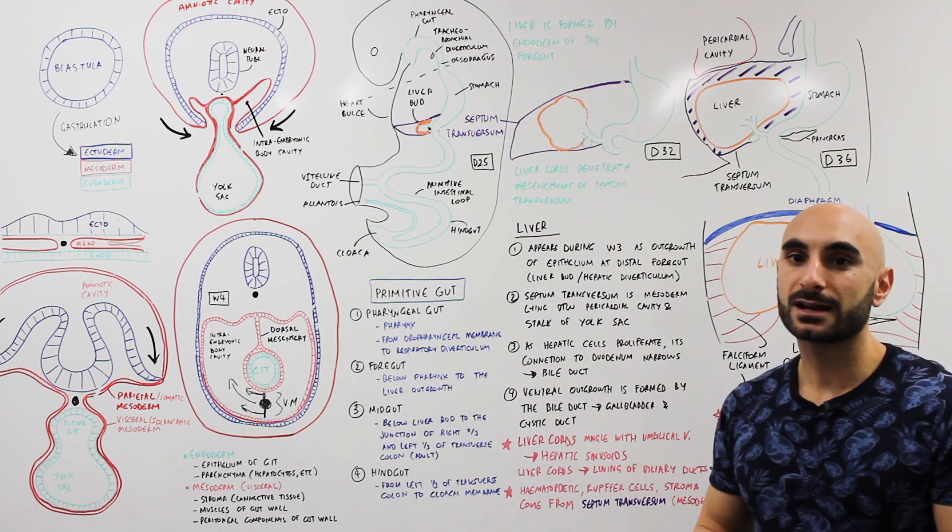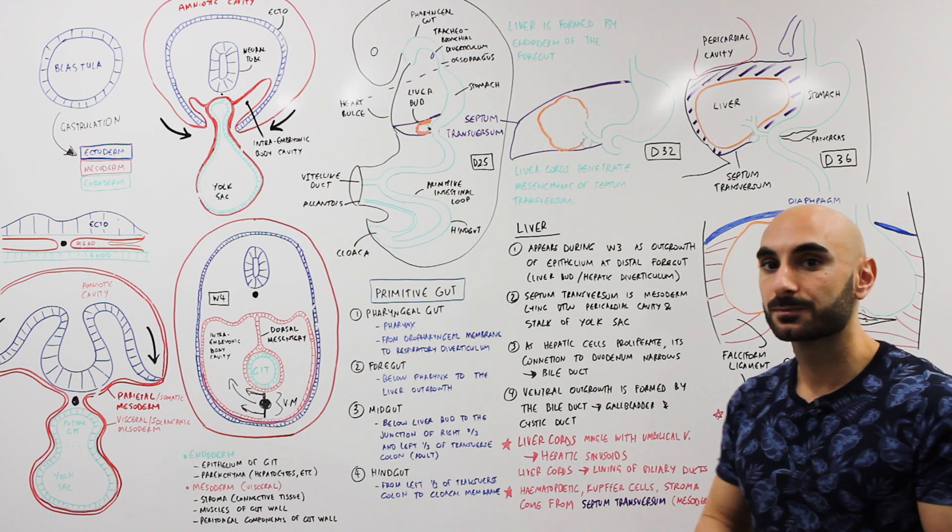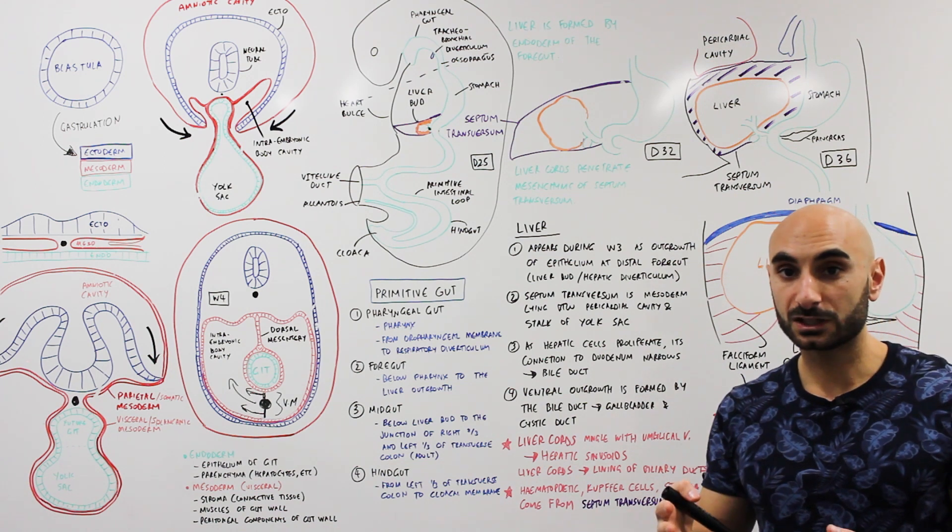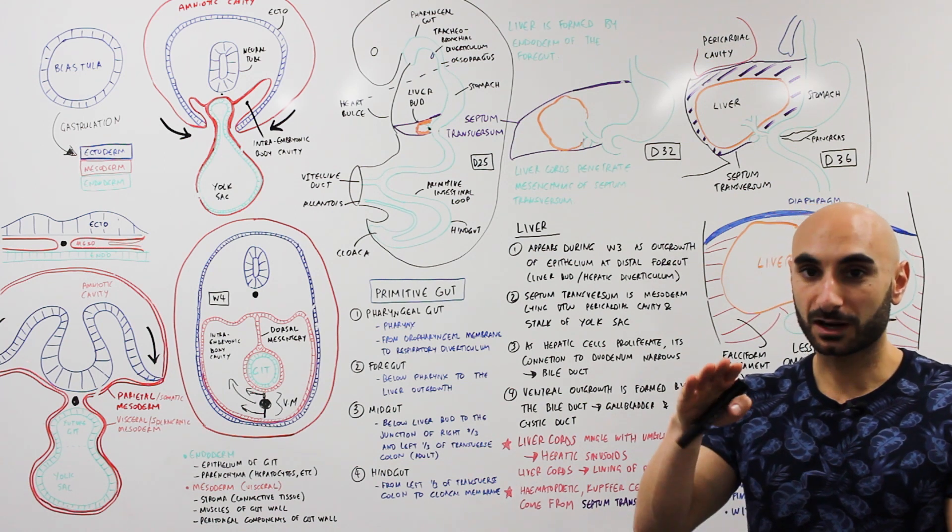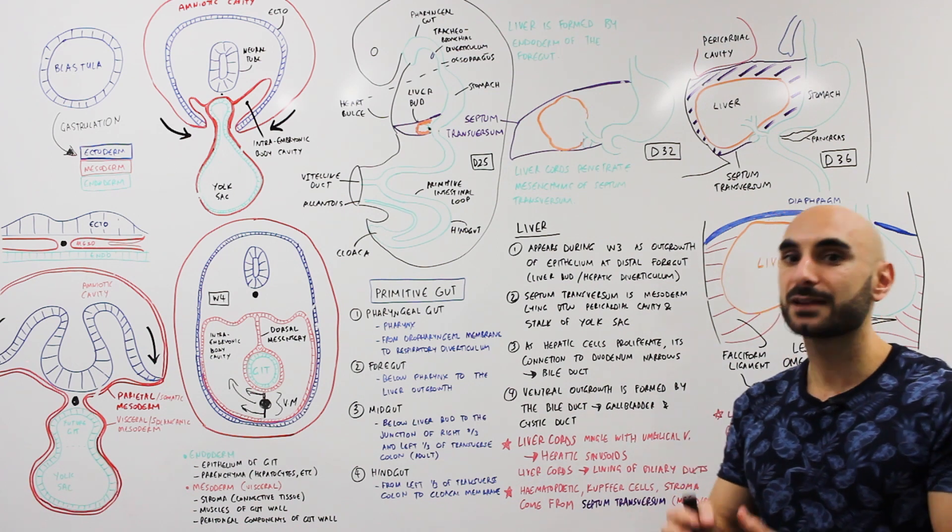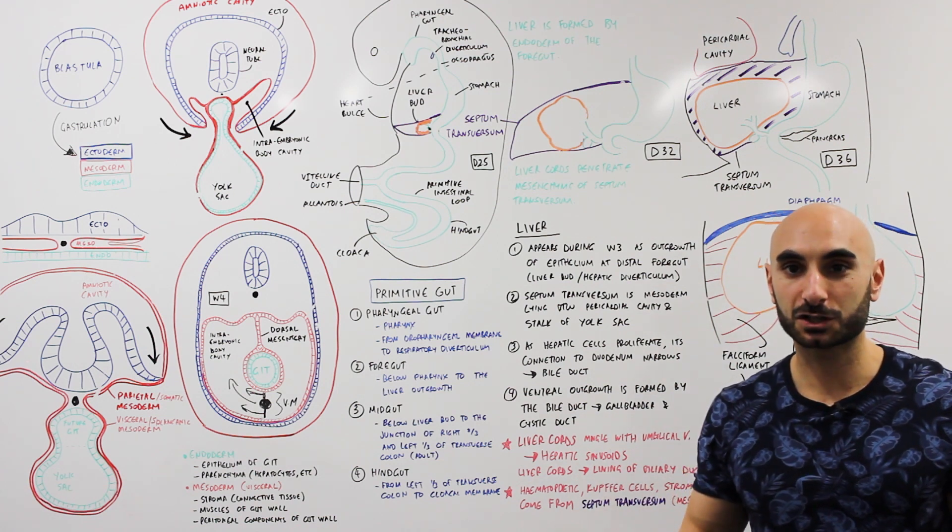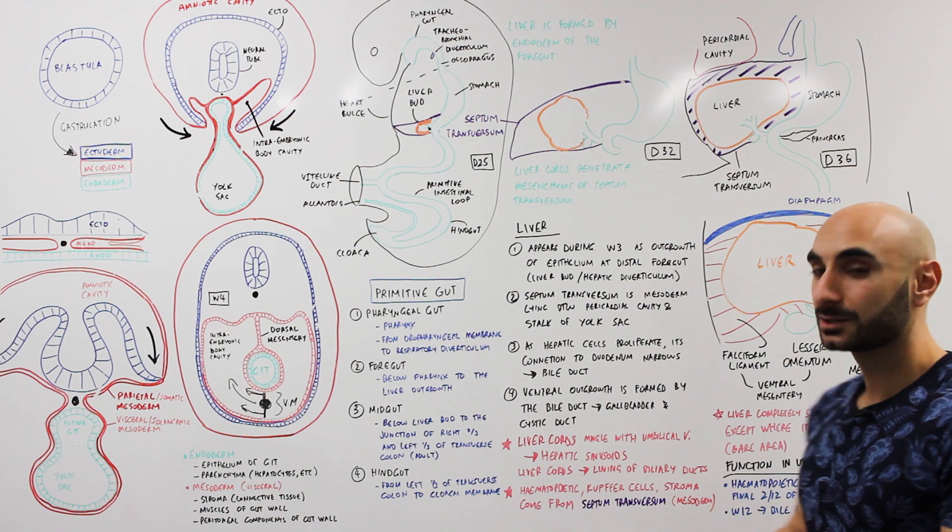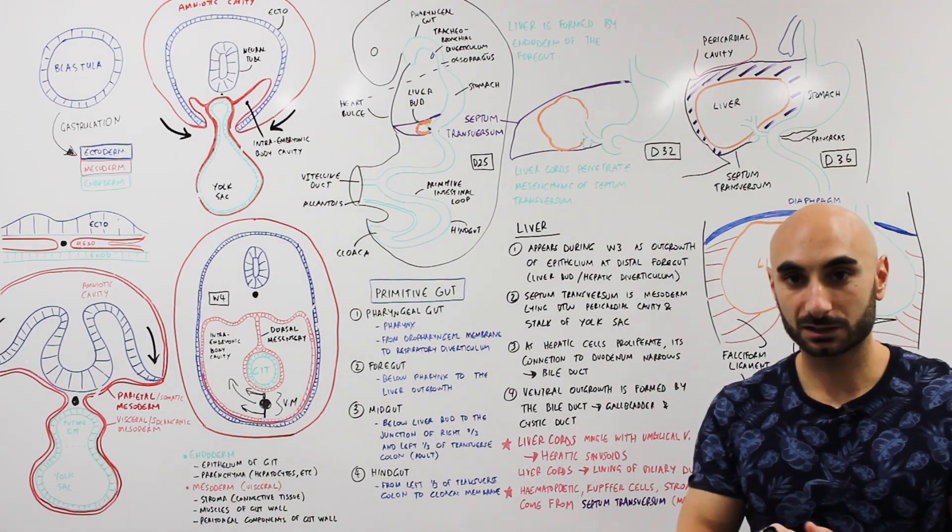Its main function is hematopoiesis, so that is it's making blood cells, red blood cells, white blood cells. The last two months of intrauterine life this function gradually declines as other parts of the body take its function over, although it still does have some residual function in birth as a hematopoietic center.